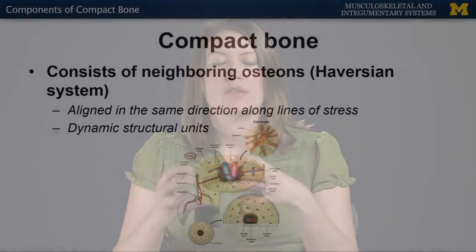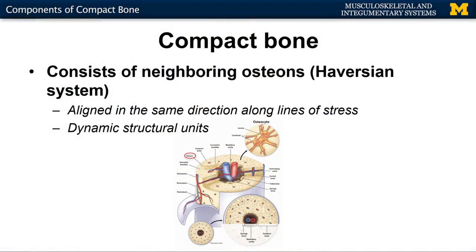What are the components of compact bone? What is giving compact bone that tree-ring-like appearance? It's these neighboring osteons, or these structural units. Sometimes you'll hear osteons referred to as the Haversian system — that's the eponym for osteons — and that's what is giving this very distinct tree-ring-like appearance.